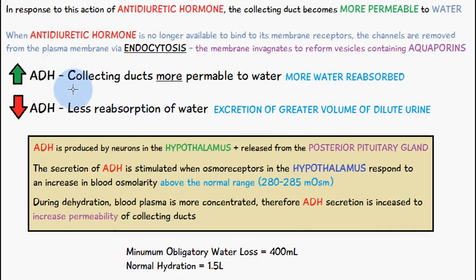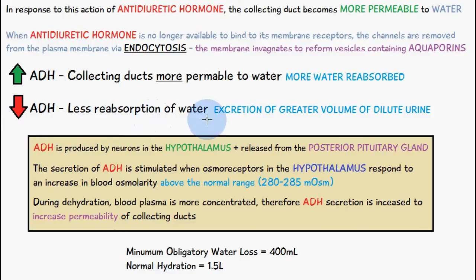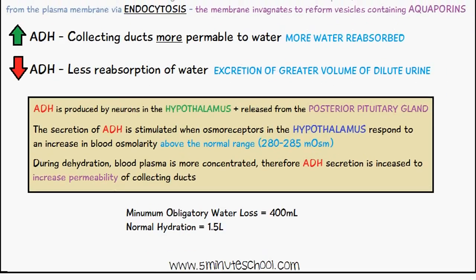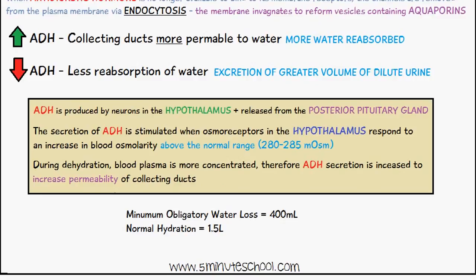If there is an increase in the amount of ADH released and binding to the collecting duct epithelial cells, the collecting ducts become more permeable to water, so more water is reabsorbed. If there is less ADH, then we have less reabsorption of water and excretion of a greater volume of dilute urine.